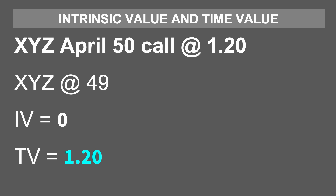Here again we have the same April 50 call, this time trading at a premium of $1.20 and XYZ is at $49.00 per share. It is out of the money because the strike price exceeds the price of the stock. It would not make sense to exercise our right to buy the stock at $50 when it's trading at $49. Therefore this option has zero intrinsic value and the entire premium of $1.20 is time value.